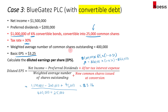Some may wonder why we add back the after-tax interest expense from the convertible debt, rather than just the interest expense itself. To explain this, let me show the derivation. I'll take the net income and the after-tax interest expense portion, leaving preferred dividends aside. Net income is derived from earnings before interest and tax (EBIT), minus the interest expense (INT, which is $60,000), giving us earnings before taxes (EBT).